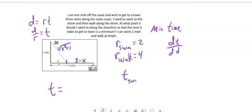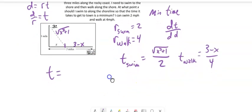So the time it takes me to swim will be its distance divided by its rate. Its distance is square root of X squared plus 1 over its rate, which is 2. So there's the time it takes to swim this distance, wherever X is. And the time it takes to walk is going to be the same idea. It's distance divided by rate. So distance is 3 minus X for that, and its rate is 4. So our total time should be the time it takes to swim plus the time it takes to walk.